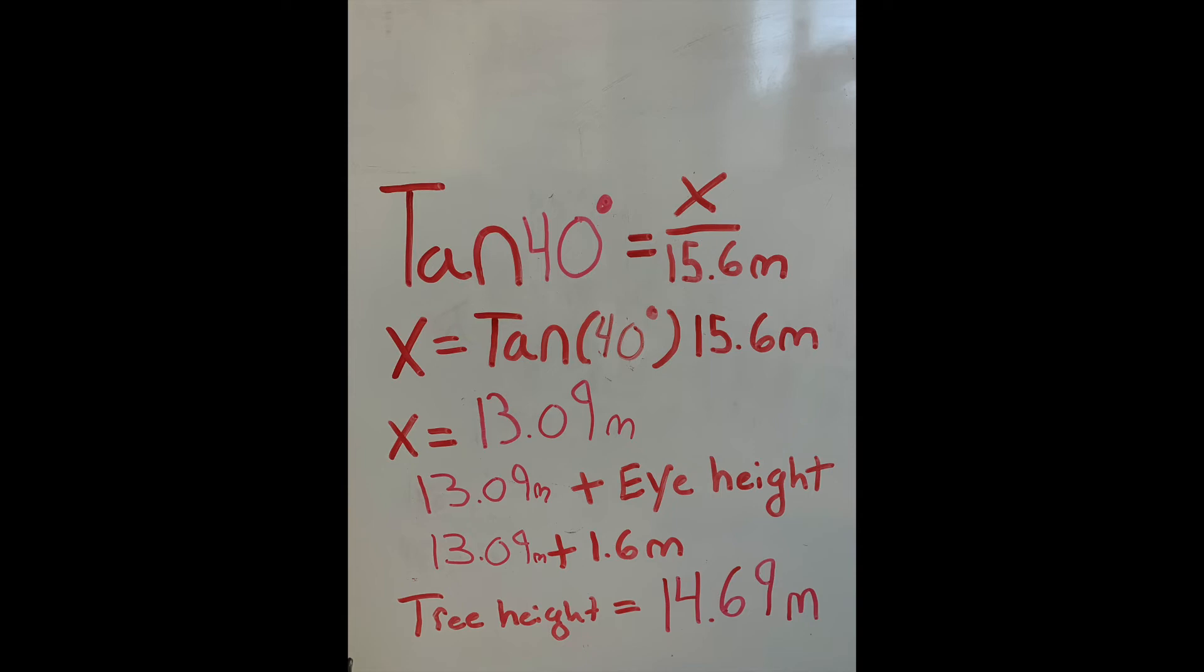You're actually going to have to add your eye height as well. Because you're not starting from the base of your feet. You're actually starting from your eye height where you're measuring. It's going to be 13.09 meters plus your eye height. In this case we said our eye height is 1.6 meters. So it's going to be 13.09 meters plus 1.6 meters, giving you a final tree height of 14.69 meters.